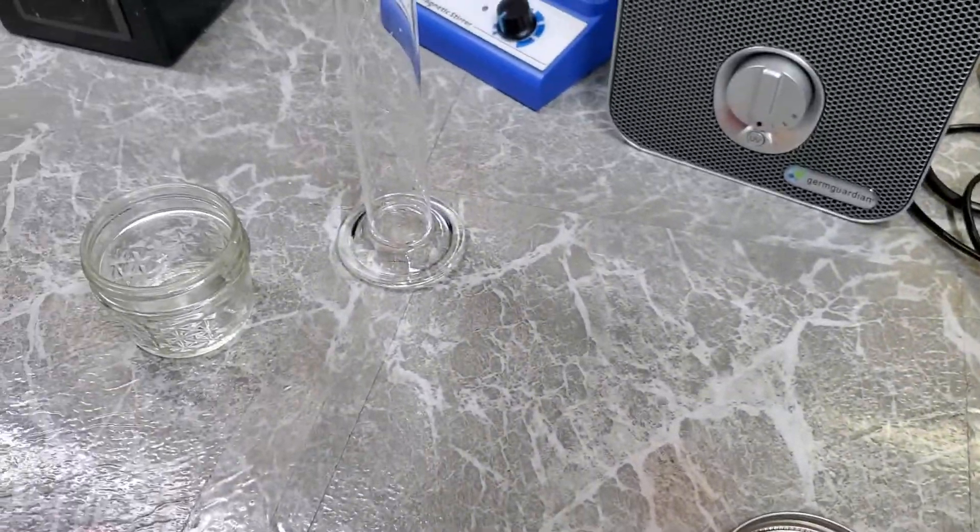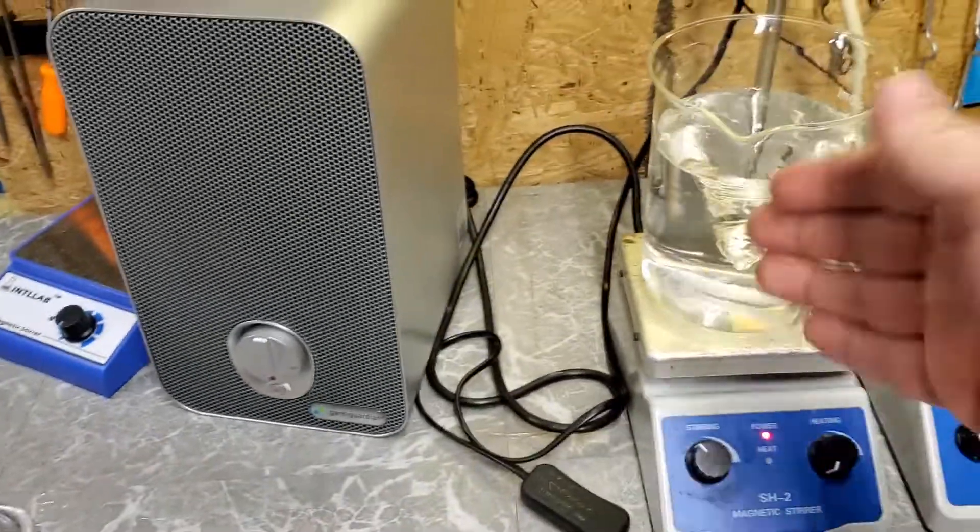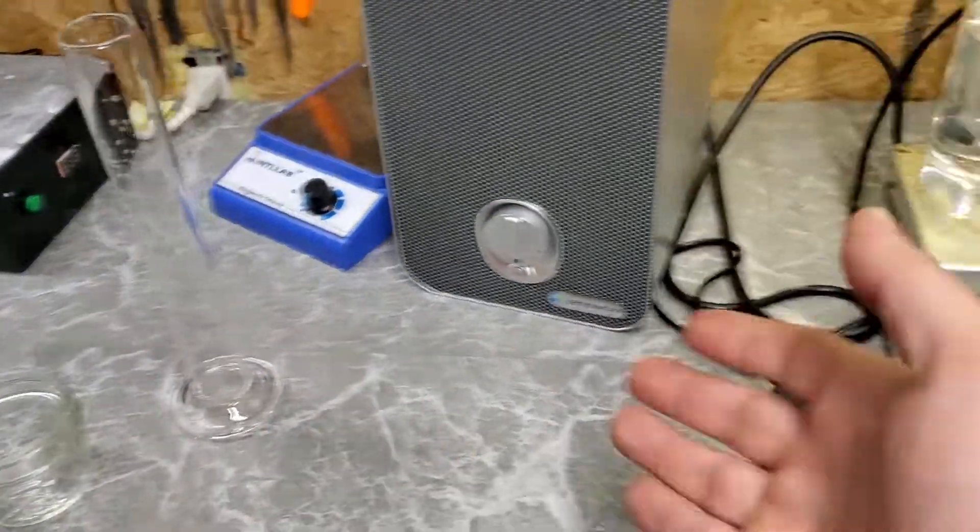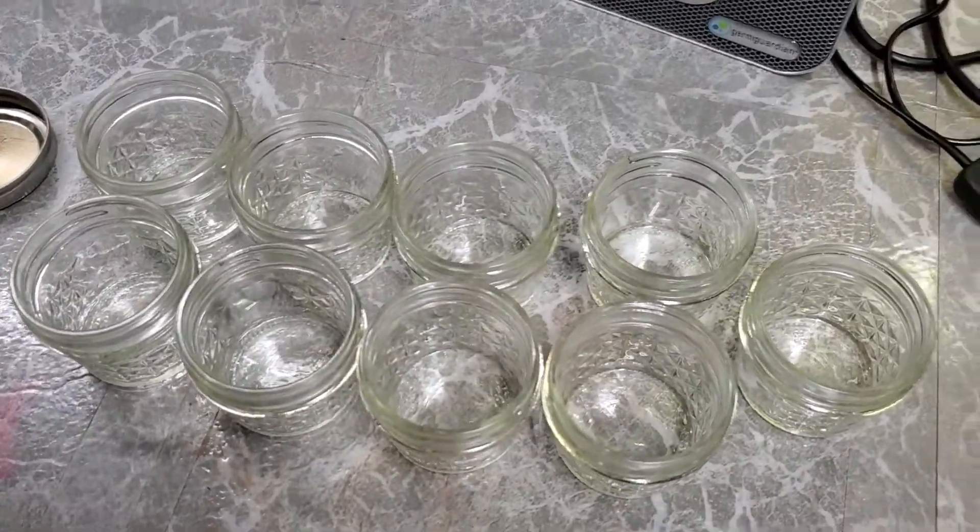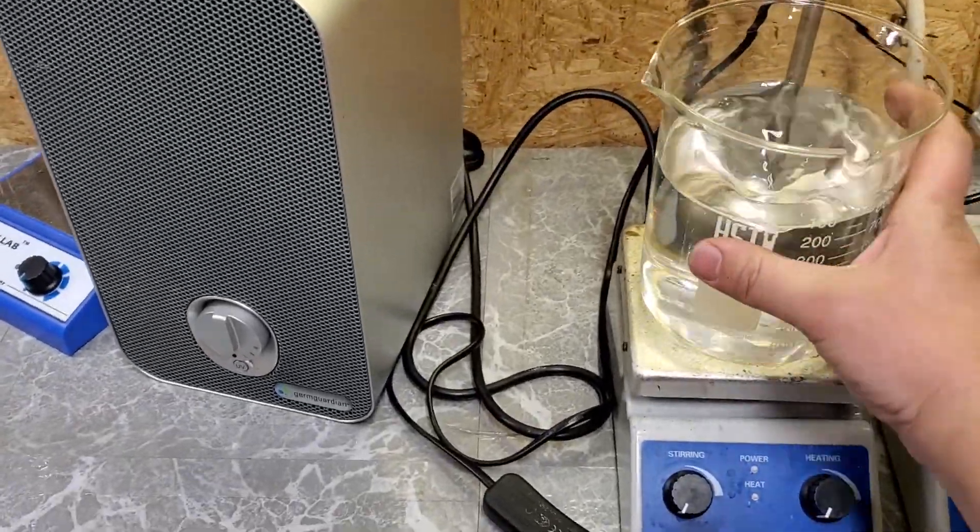Okay. Now all we have to do is just divvy this up between nine of these. So let's do it. Got all nine of them laid out here. Let me turn off stirring. I don't need that.